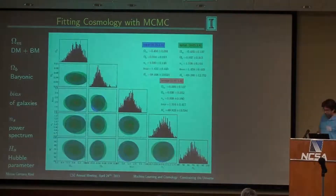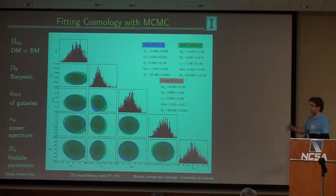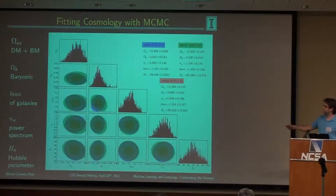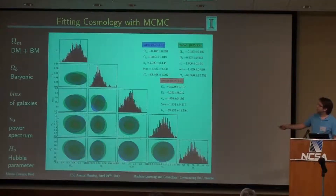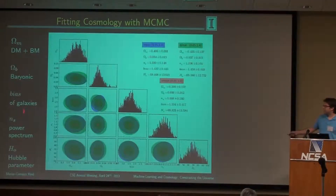To finish our framework: we compute distances, compute the clustering analysis, and then use a Markov chain Monte Carlo to fit parameters — normally five or six parameters. This is one example of a preliminary result. The omega parameters are basically the densities from the pie chart I showed at the beginning, representing dark matter and baryonic matter. You can fit the baryonic matter on its own, as well as the bias — which is the difference between the clustering of galaxies and the clustering of the dark matter behind them — along with other parameters like the Hubble parameter and the power spectrum amplitude.